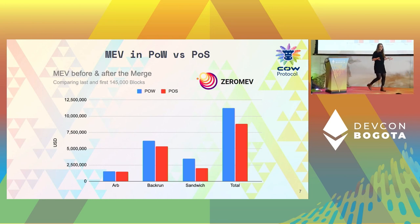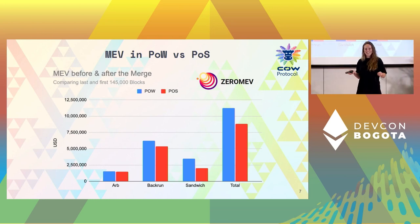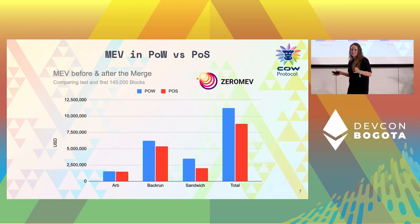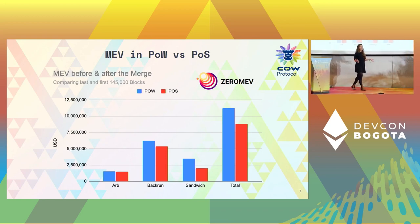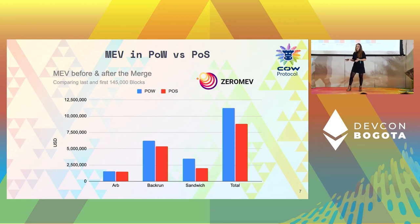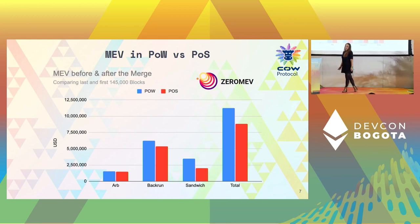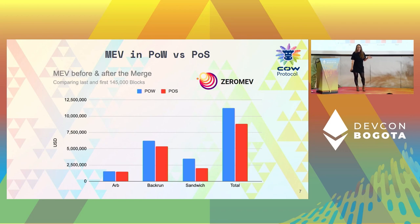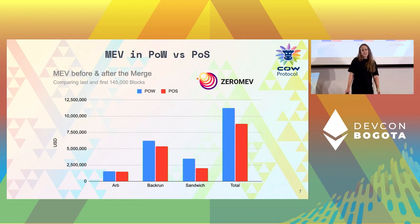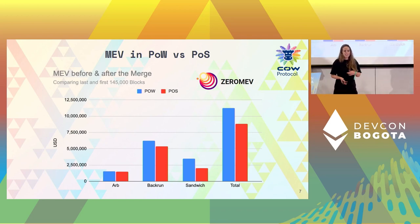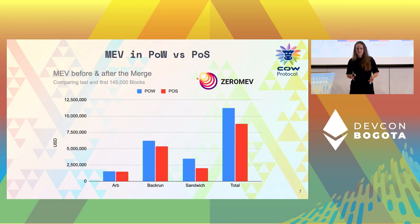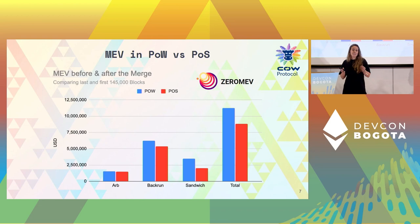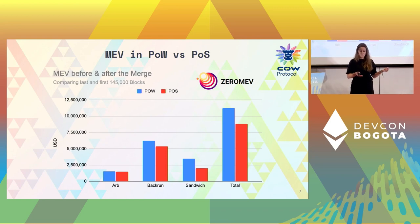Now let's look at actual data. Here you can see how much MEV has been extracted across 145,000 blocks before and after the merge — roughly equal to 20.1 days. Proof-of-stake had only been live for not even four weeks at this point, and looking at this data it almost appears that we are extracting less MEV now than before the merge.